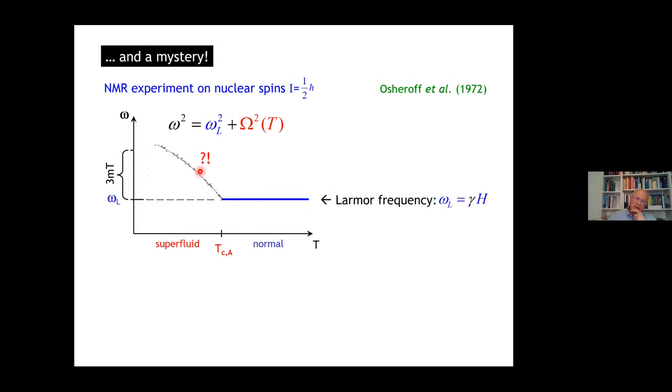You could explain that if there was an internal field of about 30 Gauss. But where on earth, Leggett said, should this field come from? Experimentalists found phenomenologically this Pythagorean rule where this increase is purely dependent on temperature.